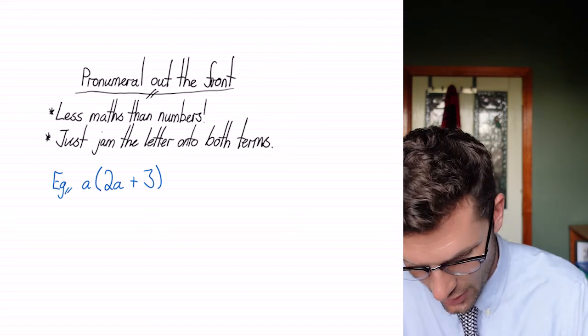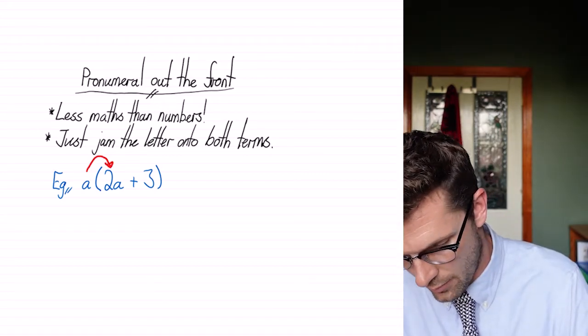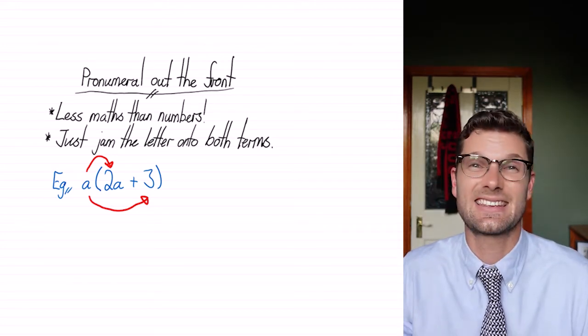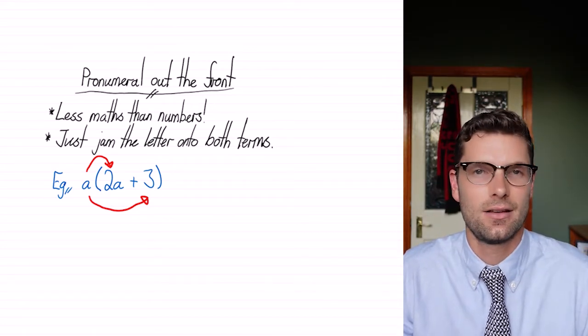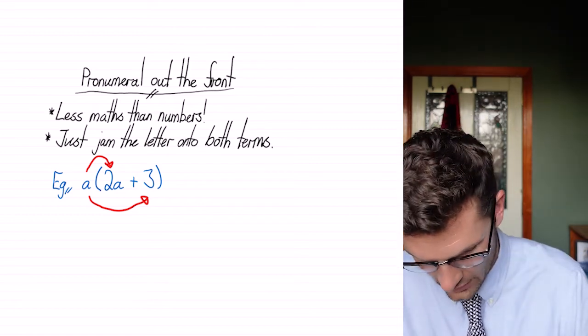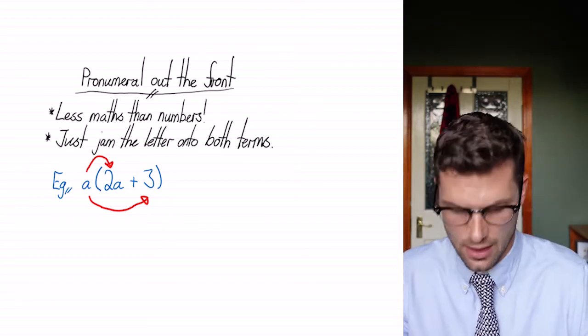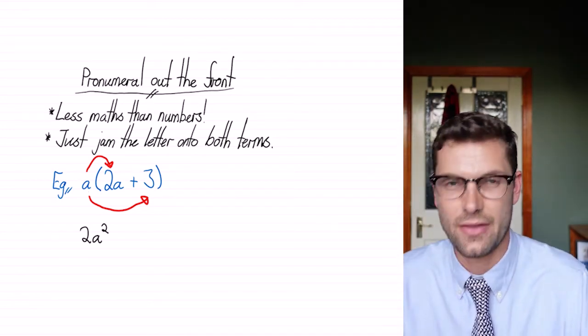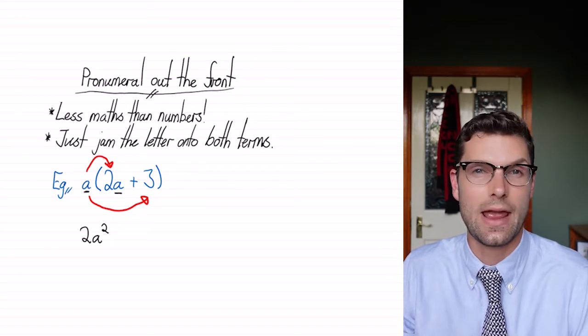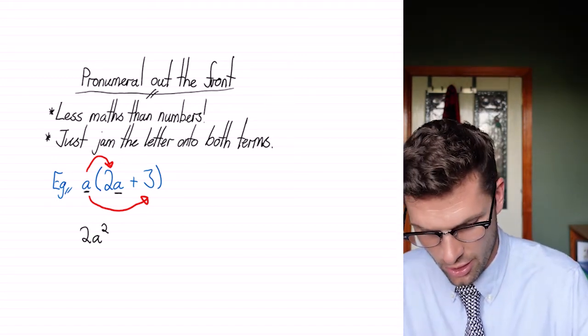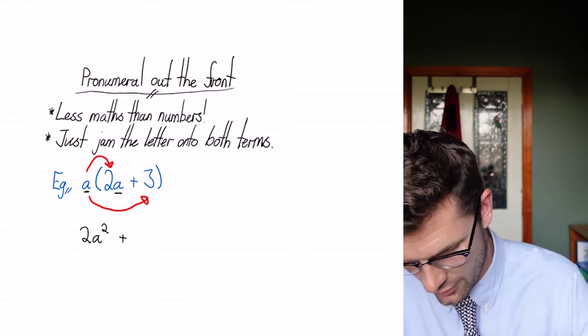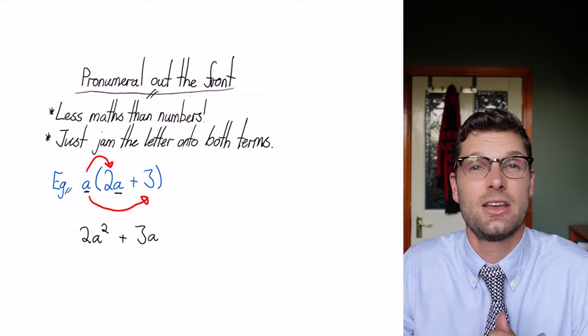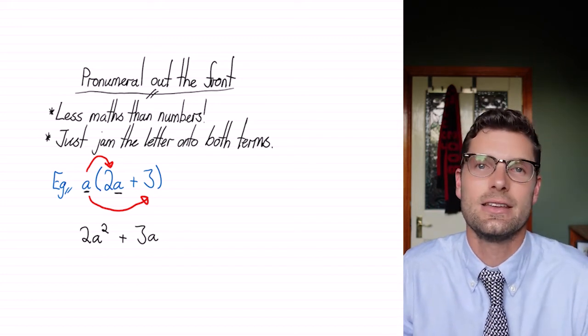So for this one here, we've got a times 2a, plus a times three. When we're multiplying pronumerals, we just count up how many letters are in each term. So for this one, we've got two times by a squared, because this a multiplied by this a gives us a square number. Then we have to add on three times that a at the front, which is just 3a. That's your final answer, no math involved. You just have to put that letter into both terms.